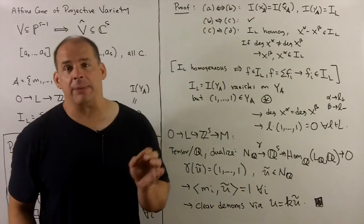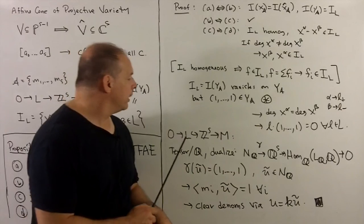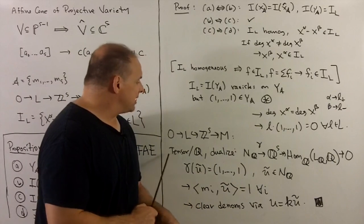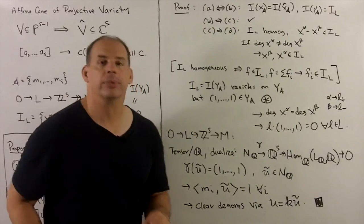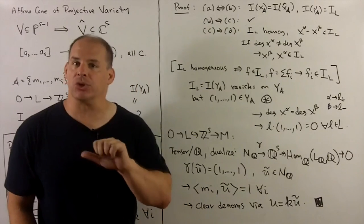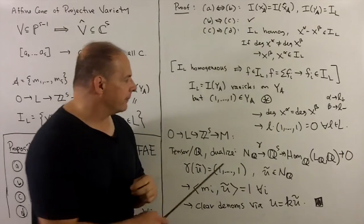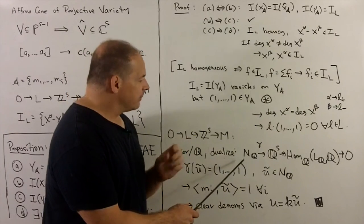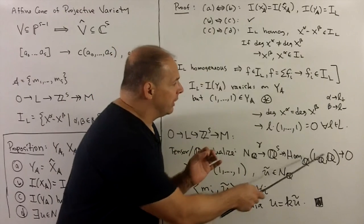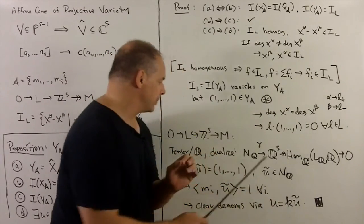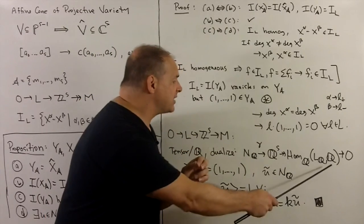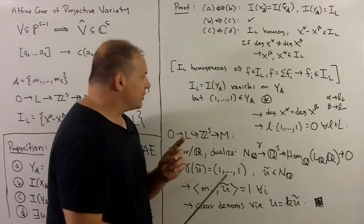For the second part, kind of abstract nonsense, what we'll do: we take our short exact sequence. These are all lattices, so I'm going to tensor over Q. That's going to give us vector spaces, and then we're going to dualize, which is going to reverse the direction of everything. So that's going to give us N sub Q going into Q to the s going into hom of LQ into Q, so linear functionals. Now, because this is exact, this is also a short exact sequence.